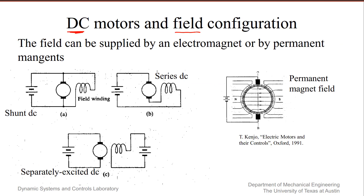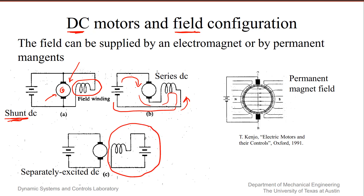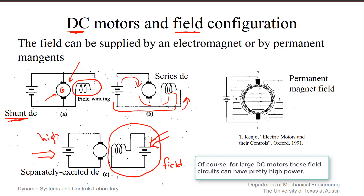DC motors are classified according to how the field is formed. I've shown here for reference a shunt DC motor — the term shunt meaning in parallel — so the field winding shown on the typical electrical schematic is in shunt or in parallel to the rotor windings. A series wound machine has the field formed by a series circuit. And then there's a separately excited DC motor that is formed by a completely different circuit, where you need to add power separately into the field coils from what you put into the armature, which you can think of as the high power transmission.